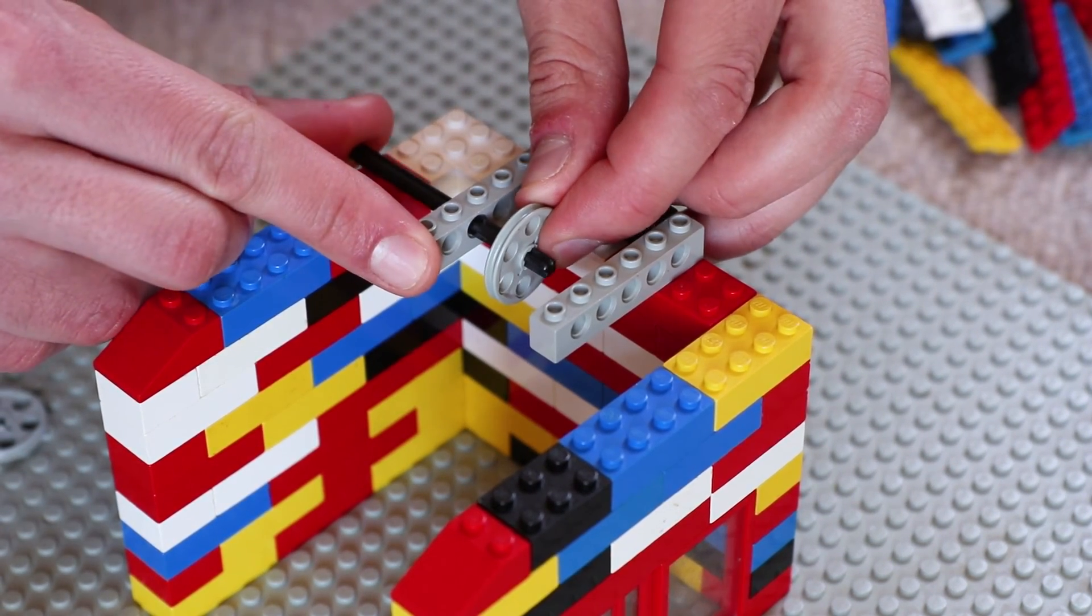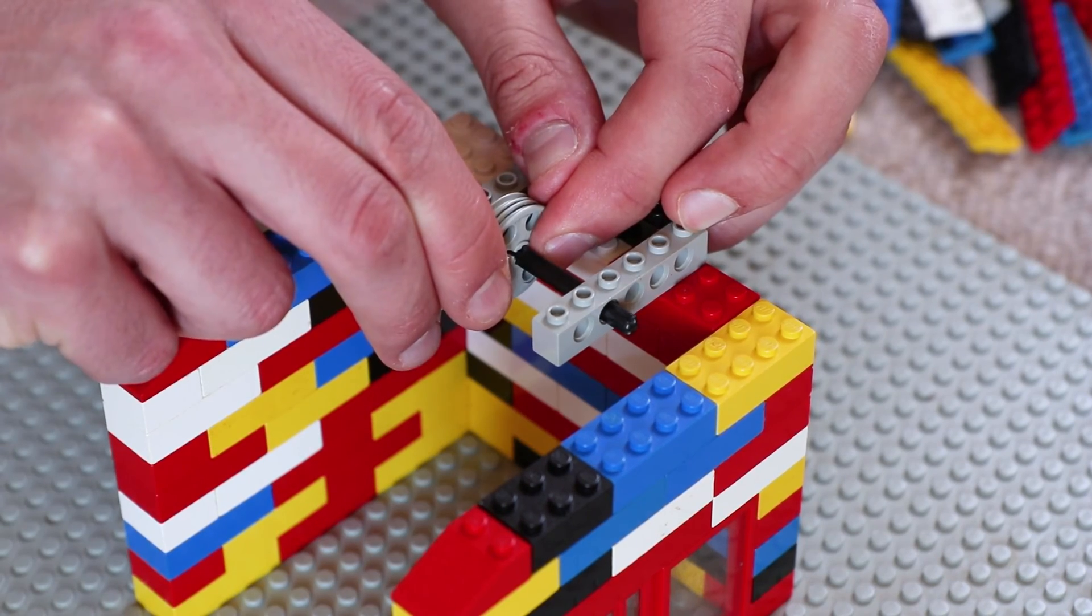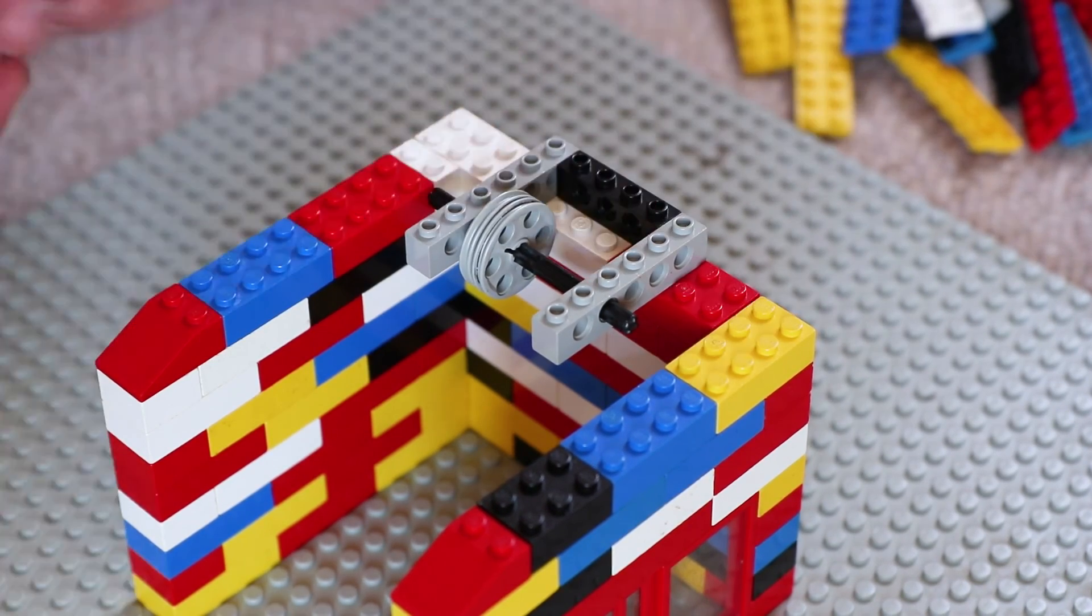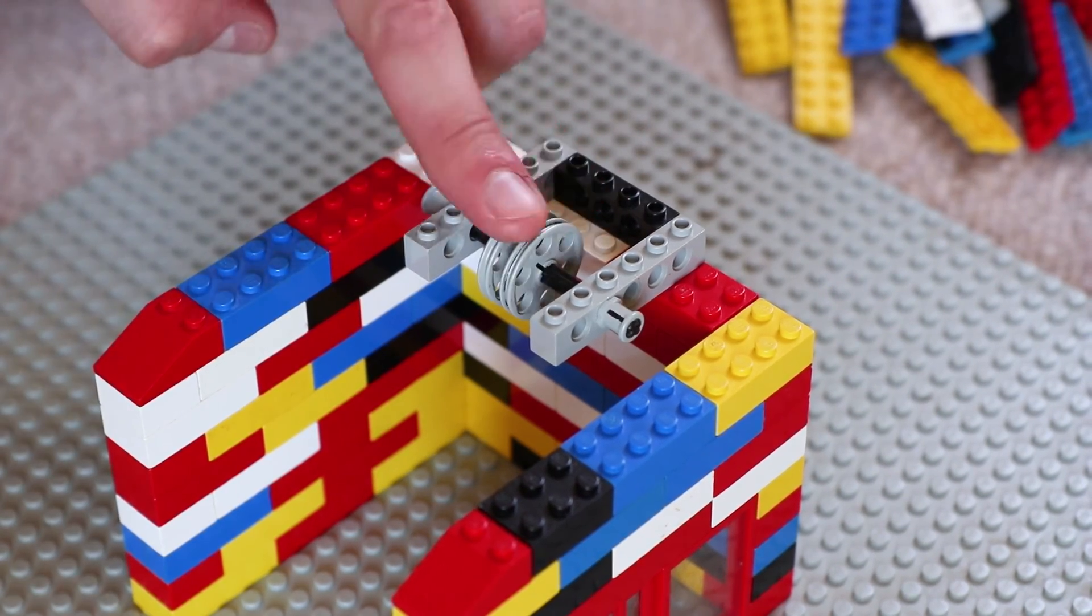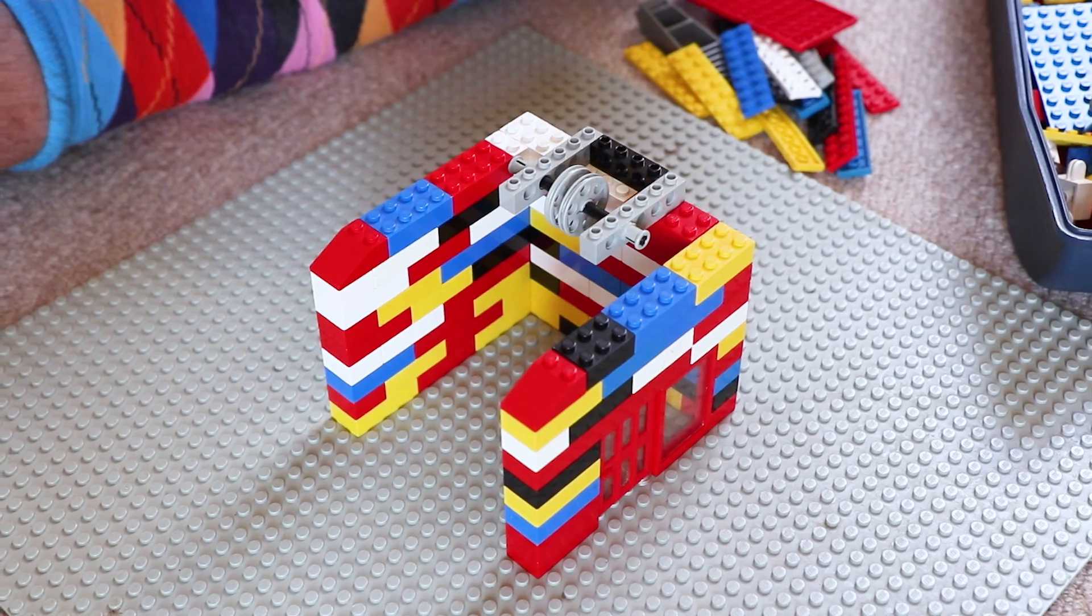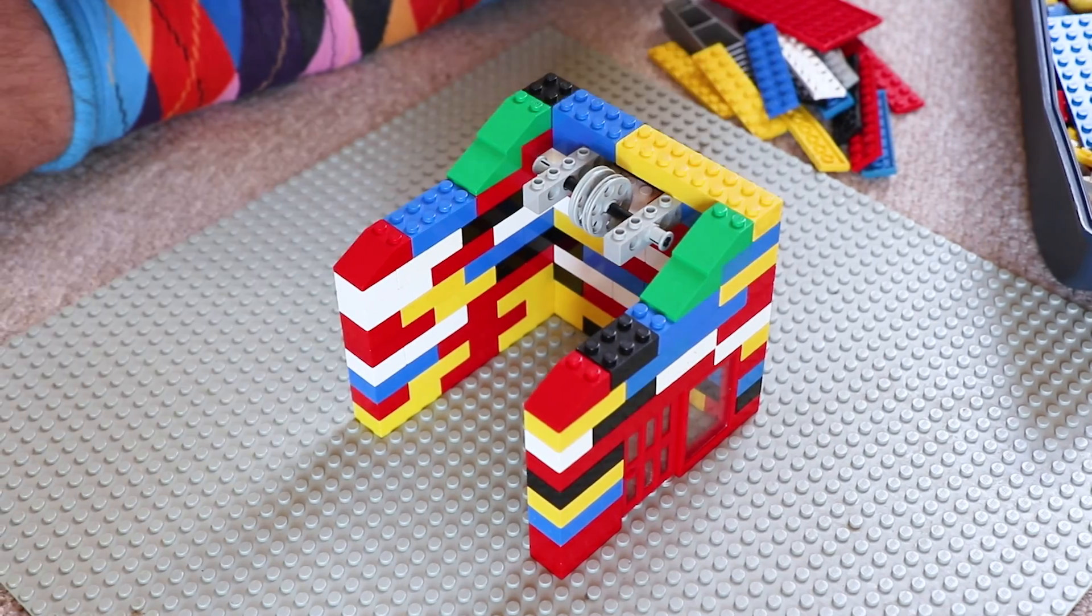This time we don't need to extend the cross axle because that was only needed for the motor on the top cable car station. Finally, secure those Technic bricks into place as before with a few more regular Lego bricks.